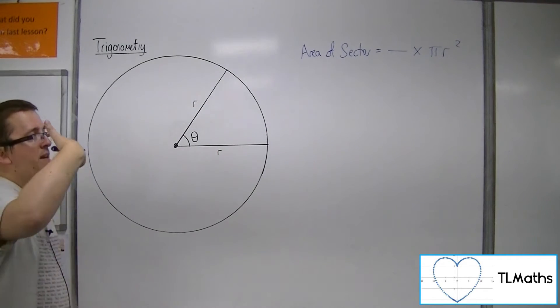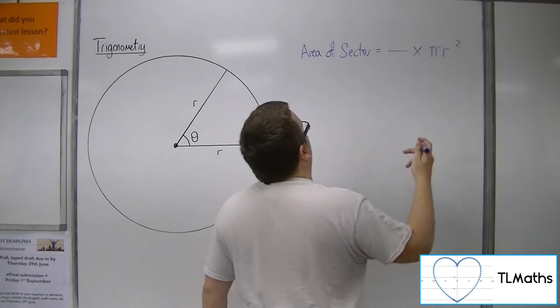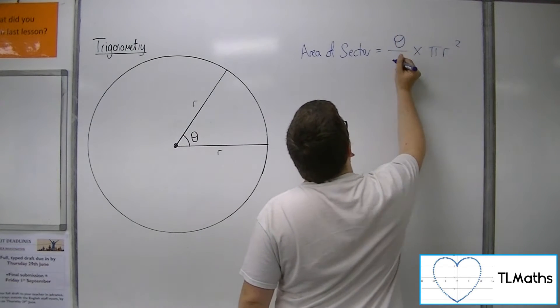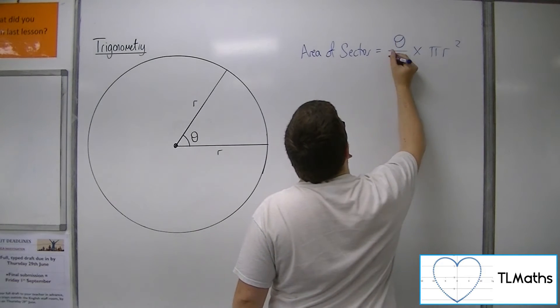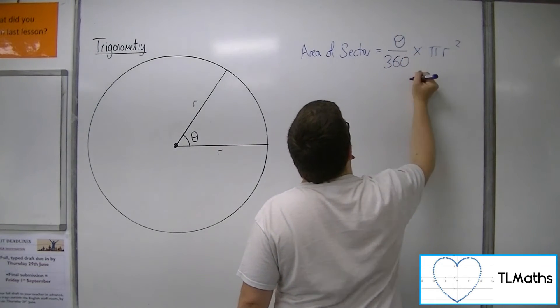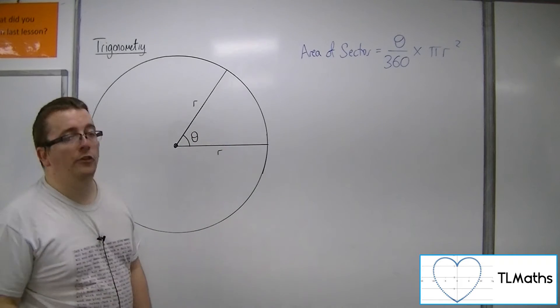So if I'm in degrees, I can say that's whatever number of degrees that I've got out of 360, times by π r squared.